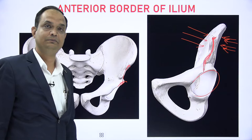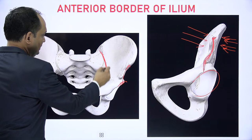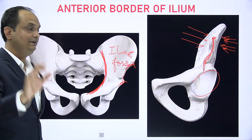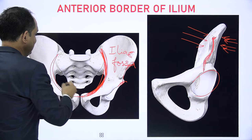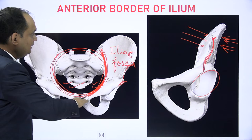The medial border is important to understand. The area which is above the medial border is known as iliac fossa — it is not known as pelvic surface. Pelvic surface comes below this border. Whenever you use the word 'pelvic,' you are always talking about the area which is deep to this medial border of ilium. The area above the medial border is iliac fossa.